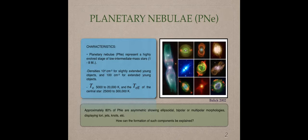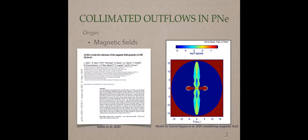This means that they show ellipsoid, bipolar, or multipolar morphology, displaying tori, jets, knots, etc. One of the most intriguing question is, how can the formation of such component be explained?